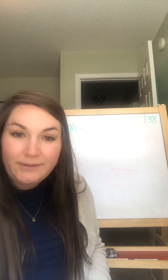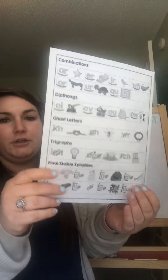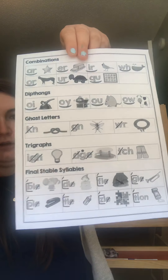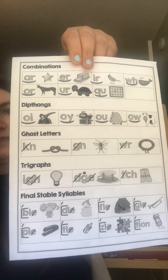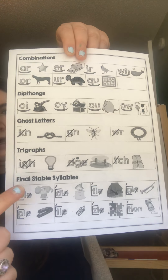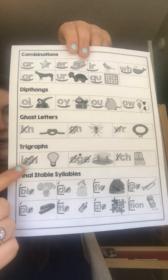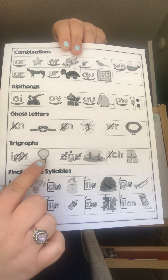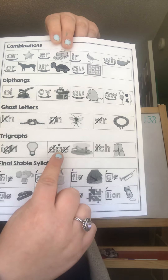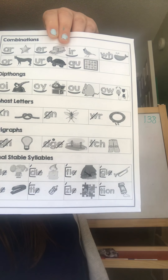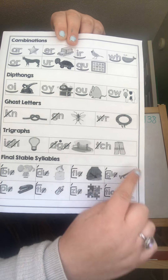The three triagraphs that we learned this year are the ones on your sheet, and if you don't have it, you can look on mine right here under triagraph. So let's go ahead and say these sounds together like we were in class. Ready? Triagraph I-G-H: I like light. Triagraph D-G-E: J like bridge. Triagraph T-C-H: like patch.